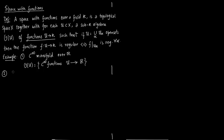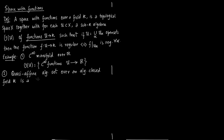The second example is a quasi-affine algebraic set, which is a space with functions over k. A quasi-affine algebraic set consists of functions like f over g, and these act on a space u and take it to k — you plug in the values and you get a number in k.